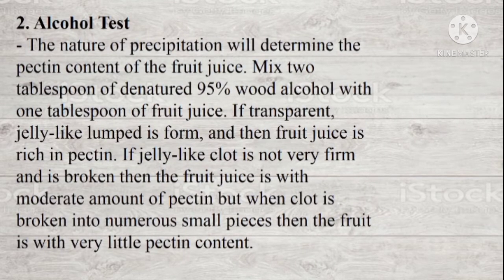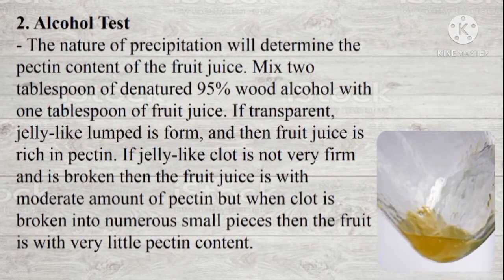The second test is the alcohol test. The nature of precipitation will determine the pectin content of the juice. Mix 2 tablespoons of saturated 95% food alcohol with 1 tablespoon of juice. A transparent jelly-like lump is formed, and then the fruit juice is rich in pectin. If the jelly-like clot is not very firm and is broken, then the fruit juice has a moderate amount of pectin. But when the clot is broken into numerous small pieces, then the fruit has very little pectin content.